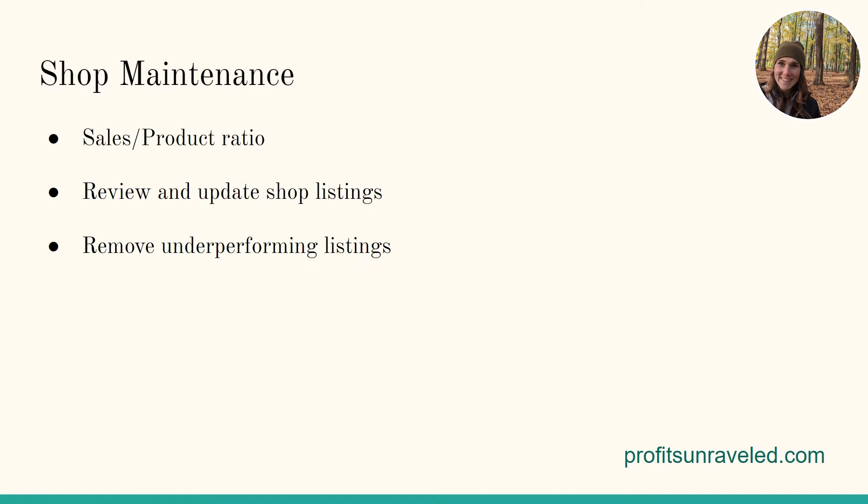Now let's talk about shop maintenance. This is really the one thing that's directly going to impact your Z rank — the other things all feed into this. We want to talk about the sales-to-product ratio and also the sales-to-views ratio. How many sales are you getting and how many products do you have listed? We want to be getting lots of sales without too many products in the shop. This is a balancing act because producing new products might lower your Z rank temporarily while those products find their place in the marketplace and work through the algorithm — and that's fine. So if your Z rank drops after publishing a bunch of products, don't freak out. That's normal.